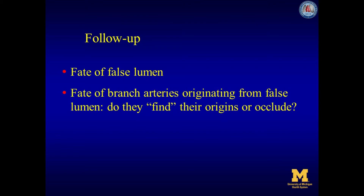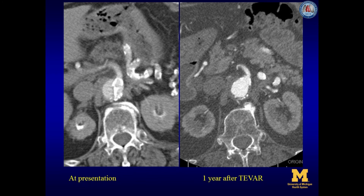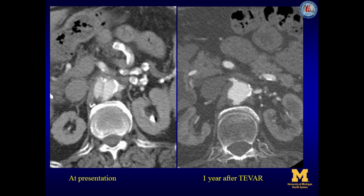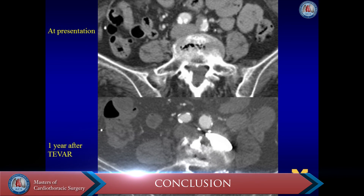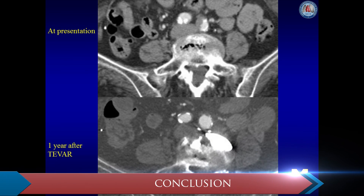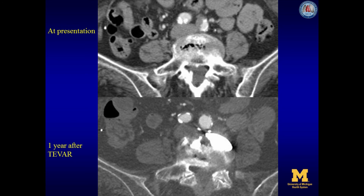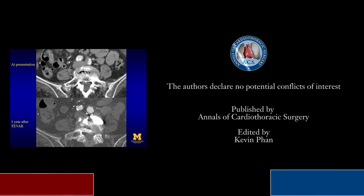During follow-up, it is important to evaluate the false lumen and the branch arteries originating from the false lumen. The collapsed true lumen at the level of the superior mesenteric artery origin at presentation — marked by atherosclerotic intimal calcium — is completely re-expanded one year after TVAR. At baseline, perfusion is seen in both the true and false lumen; one year after TVAR, perfusion is seen only in the true lumen with well-perfused kidneys. At presentation the left common iliac artery was dissected; one year after TVAR, true lumen expansion of the left common iliac artery was seen. This concludes our presentation of how acute type B aortic dissection with malperfusion is managed with TVAR in our institution.